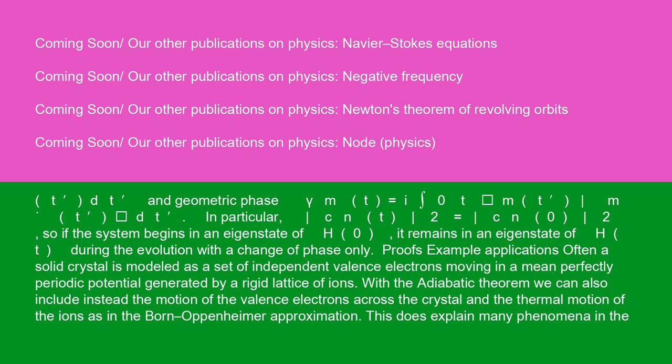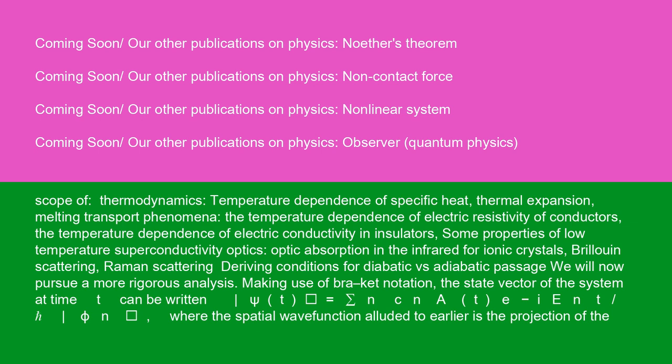Proofs and example applications: often a solid crystal is modeled as a set of independent valence electrons moving in a mean perfectly periodic potential generated by a rigid lattice of ions. With the adiabatic theorem, we can also include the motion of the valence electrons across the crystal and the thermal motion of the ions, as in the Born-Oppenheimer approximation. This explains many phenomena in the scope of thermodynamics: temperature dependence of specific heat, thermal expansion, melting, transport phenomena, temperature dependence of electric resistivity of conductors and electric conductivity of insulators, some properties of low-temperature superconductivity, optic absorption in the infrared for ionic crystals, Brillouin scattering, and Raman scattering.